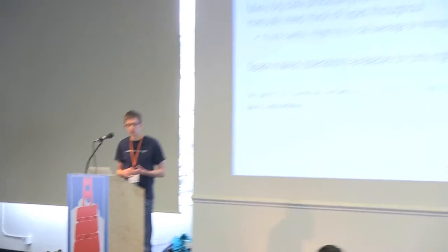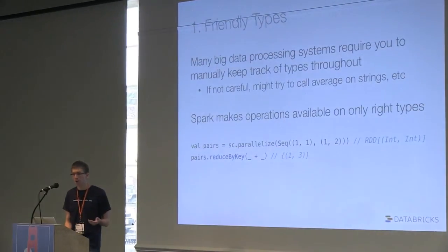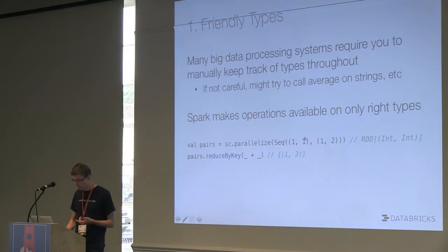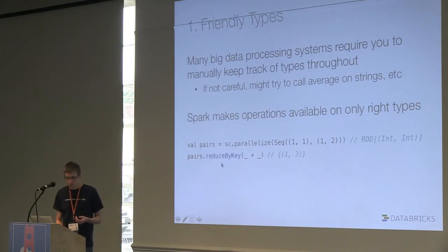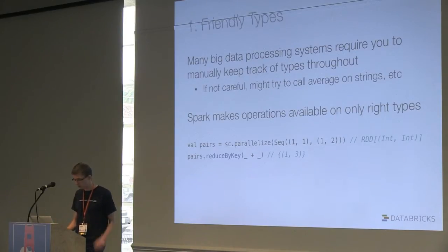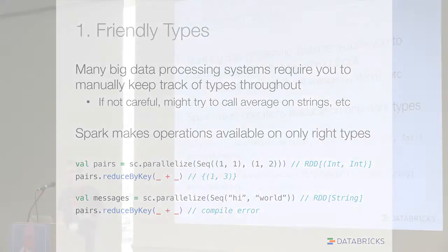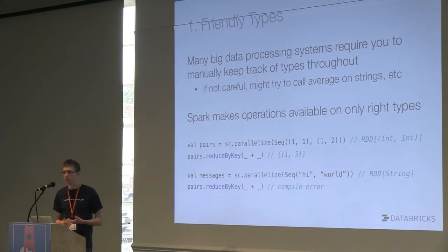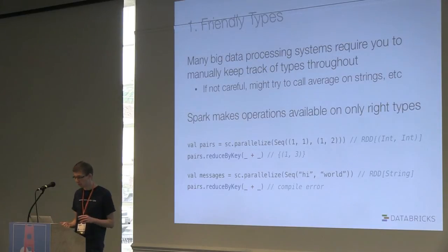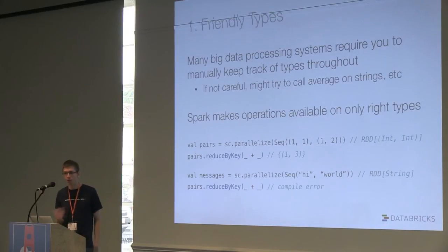In Spark, we used Scala implicits to make operations available on only the right types. For instance, if you have an RDD of key-value pairs of ints like (1,1) and (1,2), you can run reduceByKey to aggregate stuff for each key — here it adds them to get three. But if you have an RDD that contains just strings, you can't run that operation and you get a compile-time error — you realize they're not key-value pairs. If you were writing a complicated Pig script or something like that, you wouldn't see this until you tried executing it.